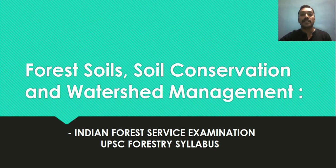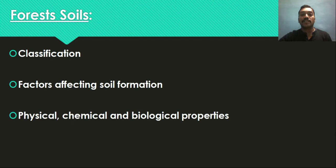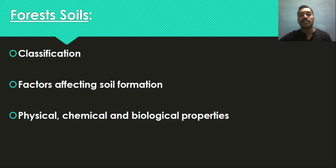Let us see one by one — Forest Soil, Soil Conservation, and Watershed Management. Under forest soil, we will start with the classification of forest soil. Classification is important for better management in forestry. Soil is mainly classified based on organic matter content — into two broader categories: organic soil and mineral soil. Another important classification is based on the United States Department of Agriculture (USDA). Differentiating soils into different types helps in understanding soil problems and planning interventions.